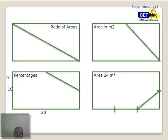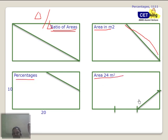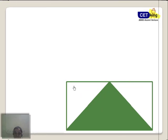Let me summarize what we've done so far. First question: find the ratio of a particular area to the total. Second: area was given in square meters — find that particular area. Third: find the percentage. Fourth: area is given — find how much the shaded portion should be. You will get one question out of these four types in the exam. We have done fairly basic questions to start — let's move on to the next challenge.